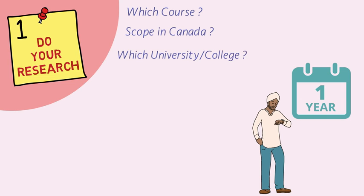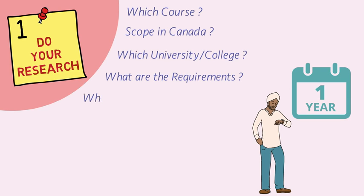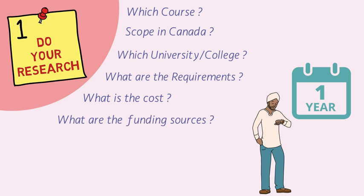After deciding on a course, it comes down to selecting your university or colleges. I would suggest you pen down a few universities and colleges where you want to get admission. For those colleges and universities you have selected, you should know the exact requirements so you can prepare accordingly. IELTS requirements differ from one college to another, and even within the same college, different courses have different IELTS requirements. You should also be aware of the cost and how much money you actually need.